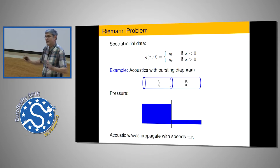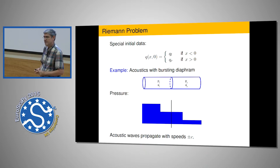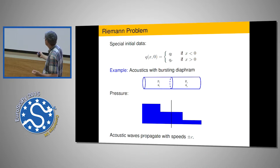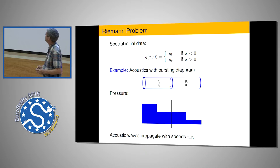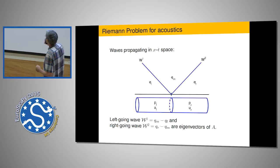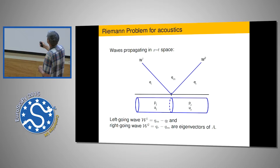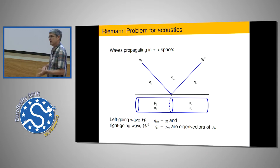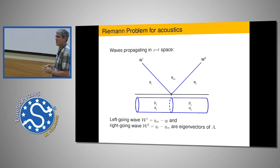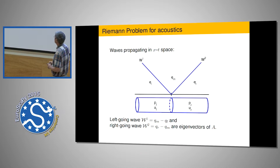Well, it goes pop—from that initial jump in pressure you get two acoustic waves, one propagating to the right and one to the left at speeds plus or minus c. These are the eigenvalues of the two-by-two matrix, and the eigenvectors describe what those waves are. In the x-t plane with time going upwards, from the initial discontinuity you just get two waves propagating away. More complicated hyperbolic systems have exactly the same structure—just more waves if there are more equations.